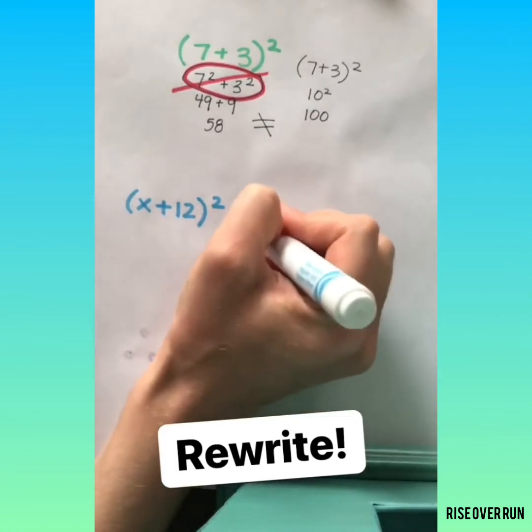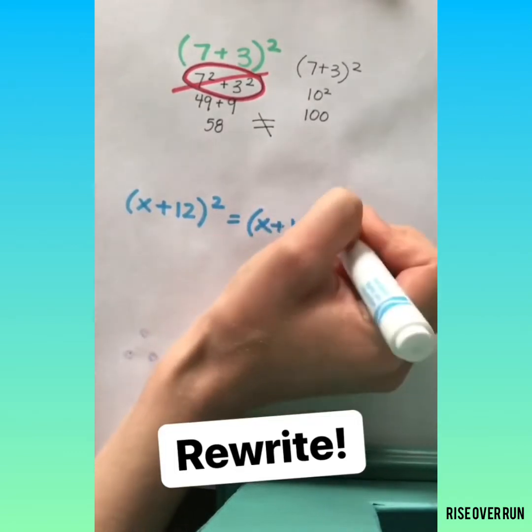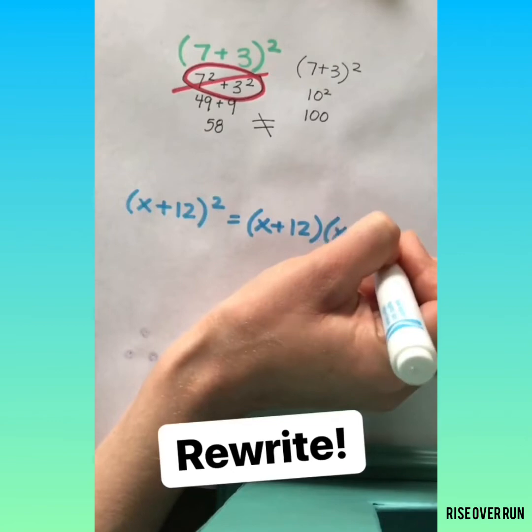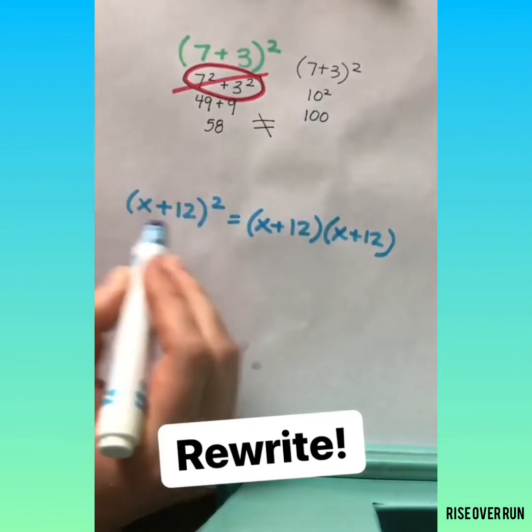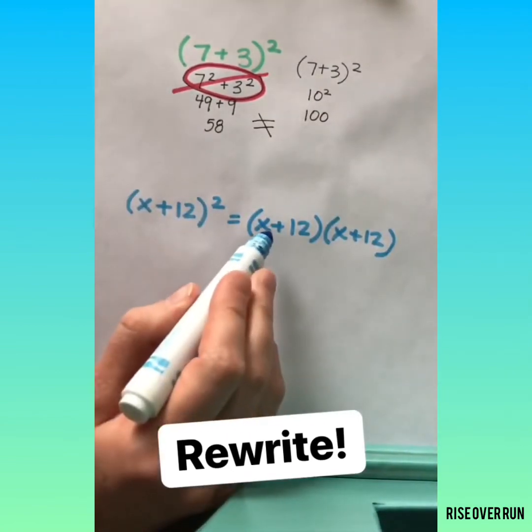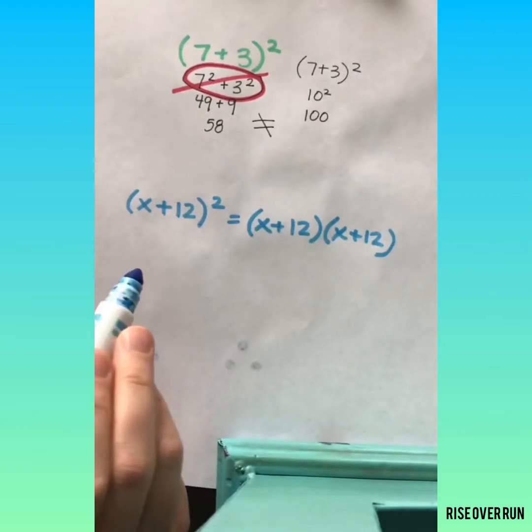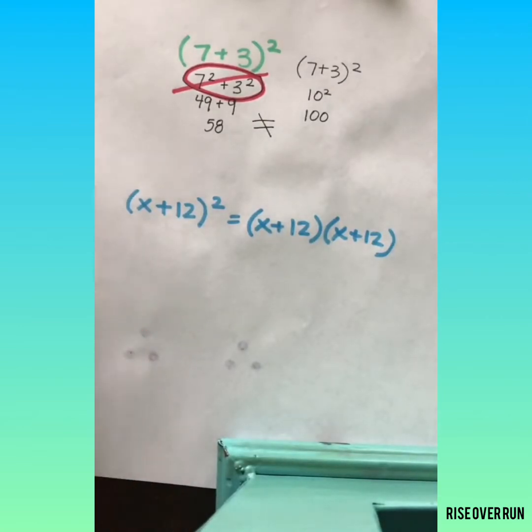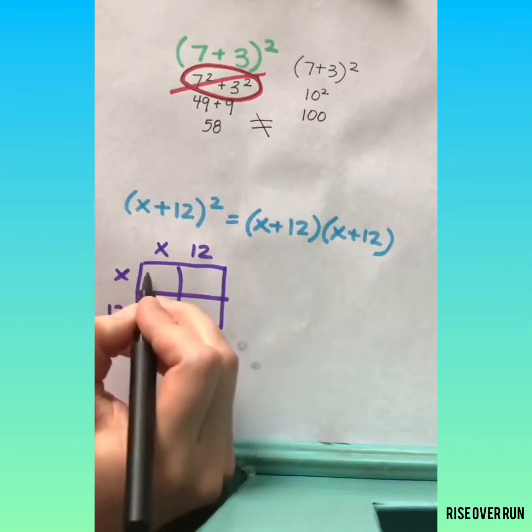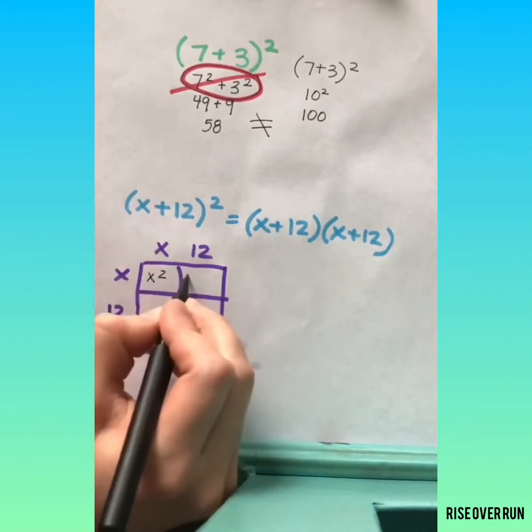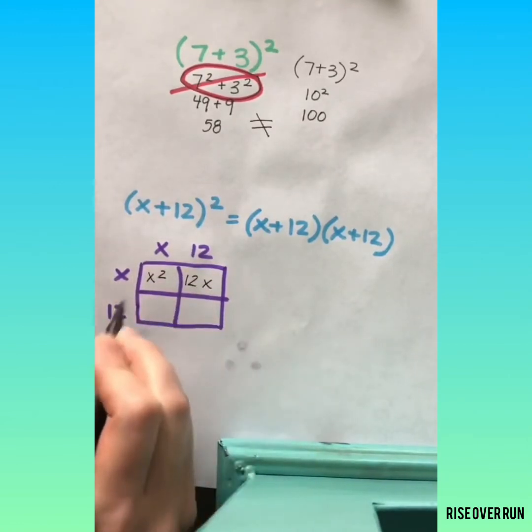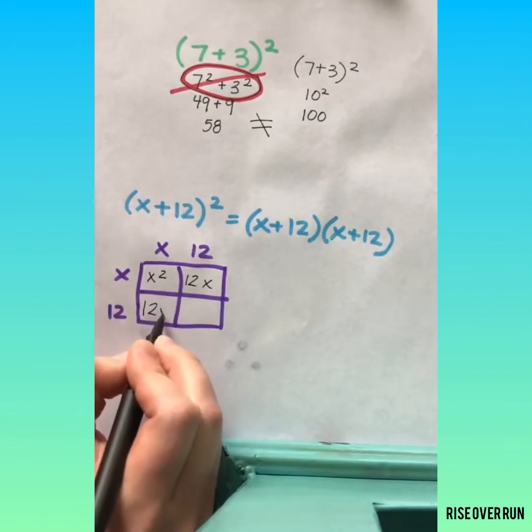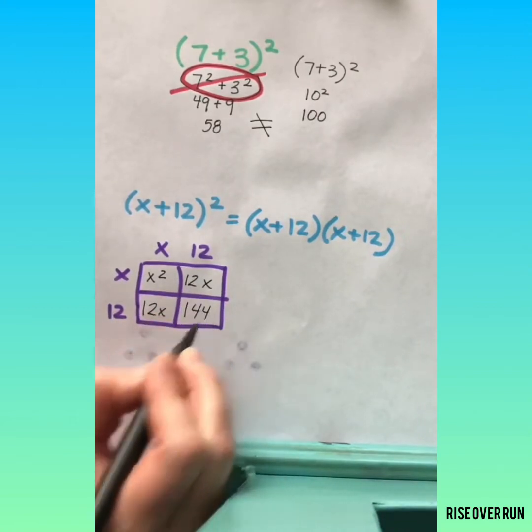If you see a polynomial and an exponent outside the parentheses, rewrite the polynomial twice. X plus 12 squared just means X plus 12 times X plus 12. Now we can distribute or do an area model. X times X is X squared. X times 12, 12 times X, 12 times 12, and 12 times 12 is 144.